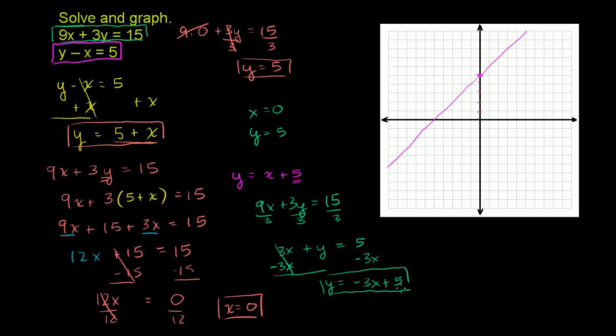So that's what this first equation gets turned into if you put it in slope intercept form. y is equal to negative 3x plus 5. So if you were to graph it, the y-intercept is 5, 0, 5. And then its slope is negative 3. So you move 1 in the x direction, you move down 3 in the y direction. So this line is going to look something like that right there.